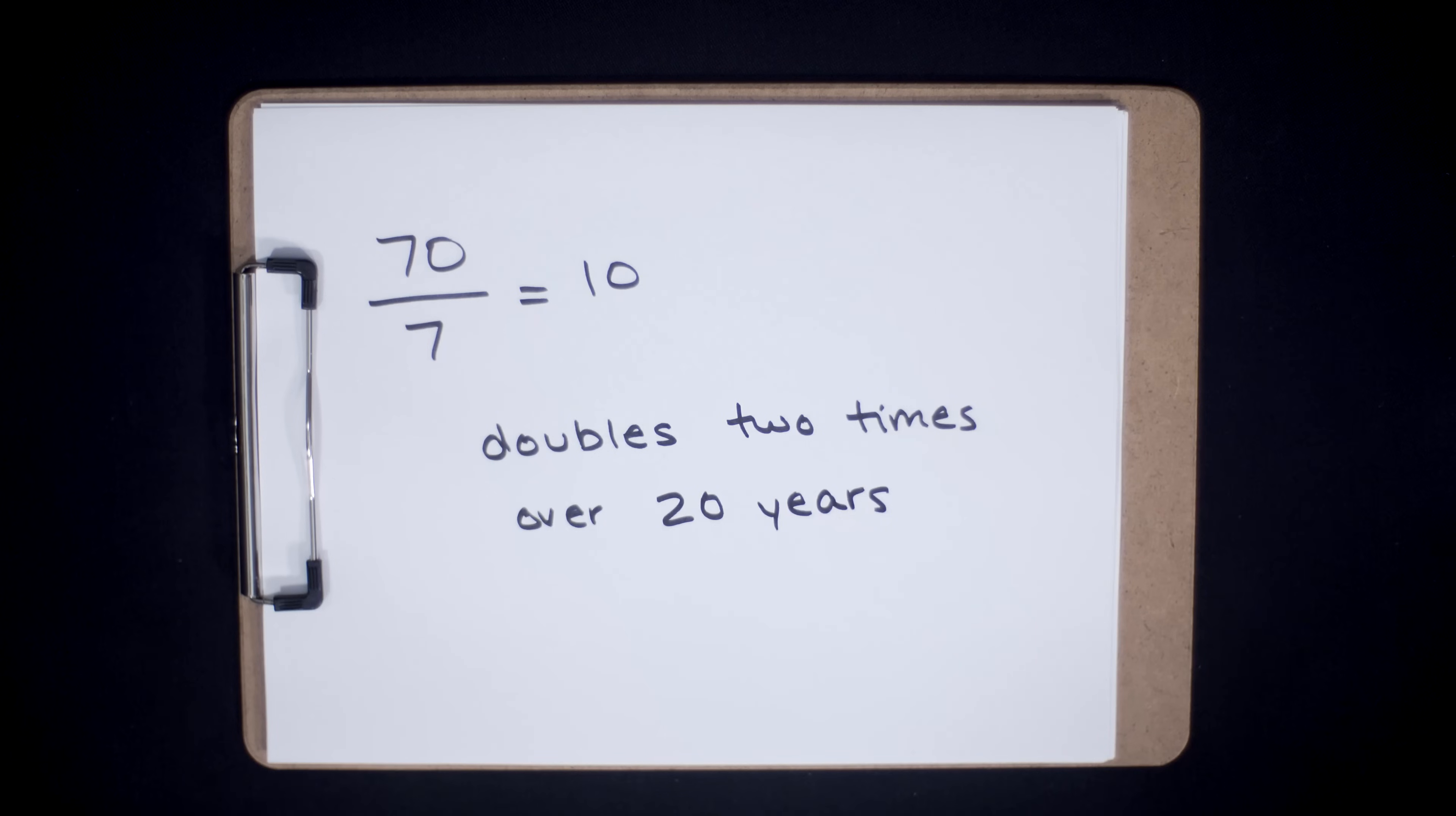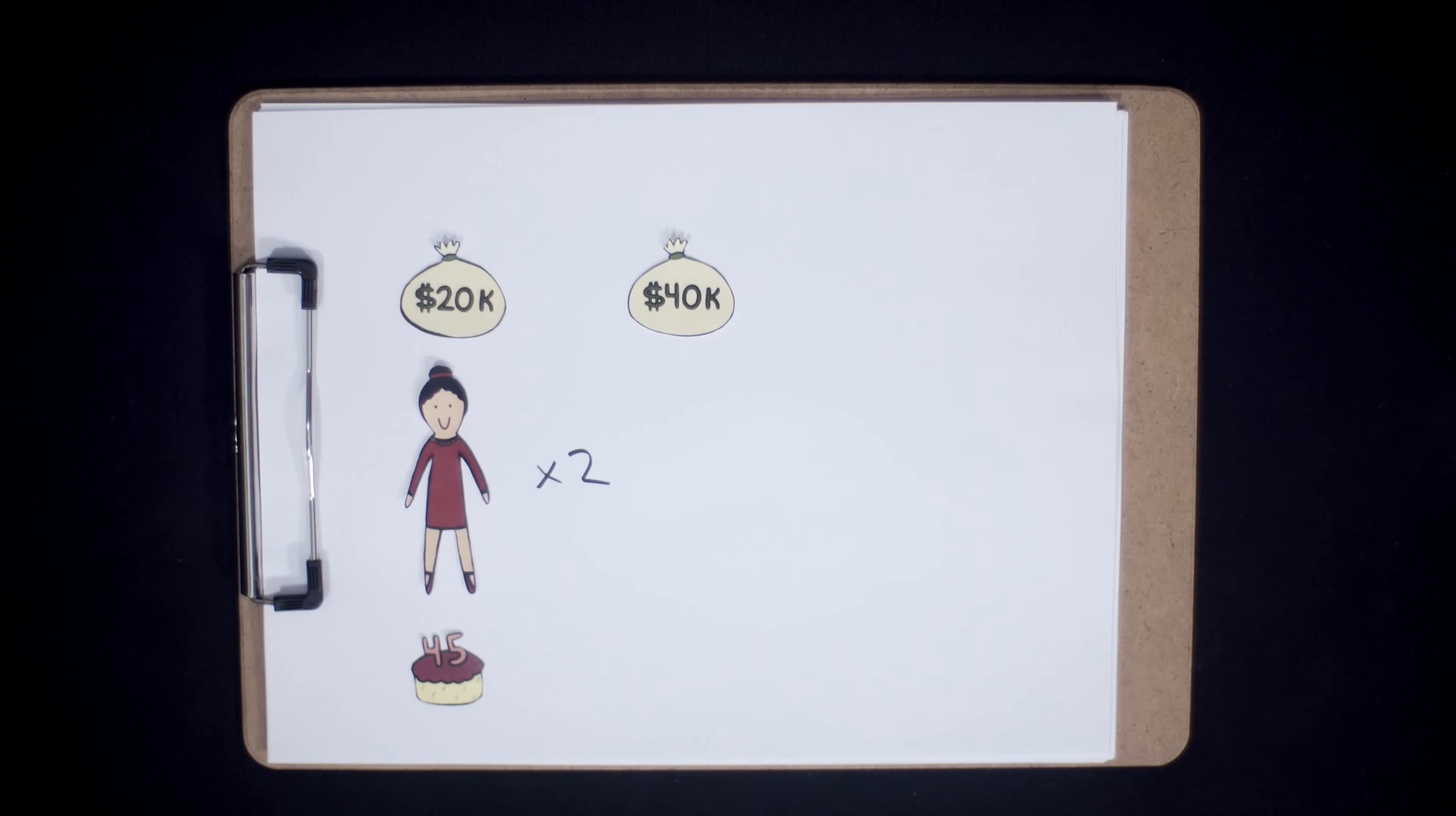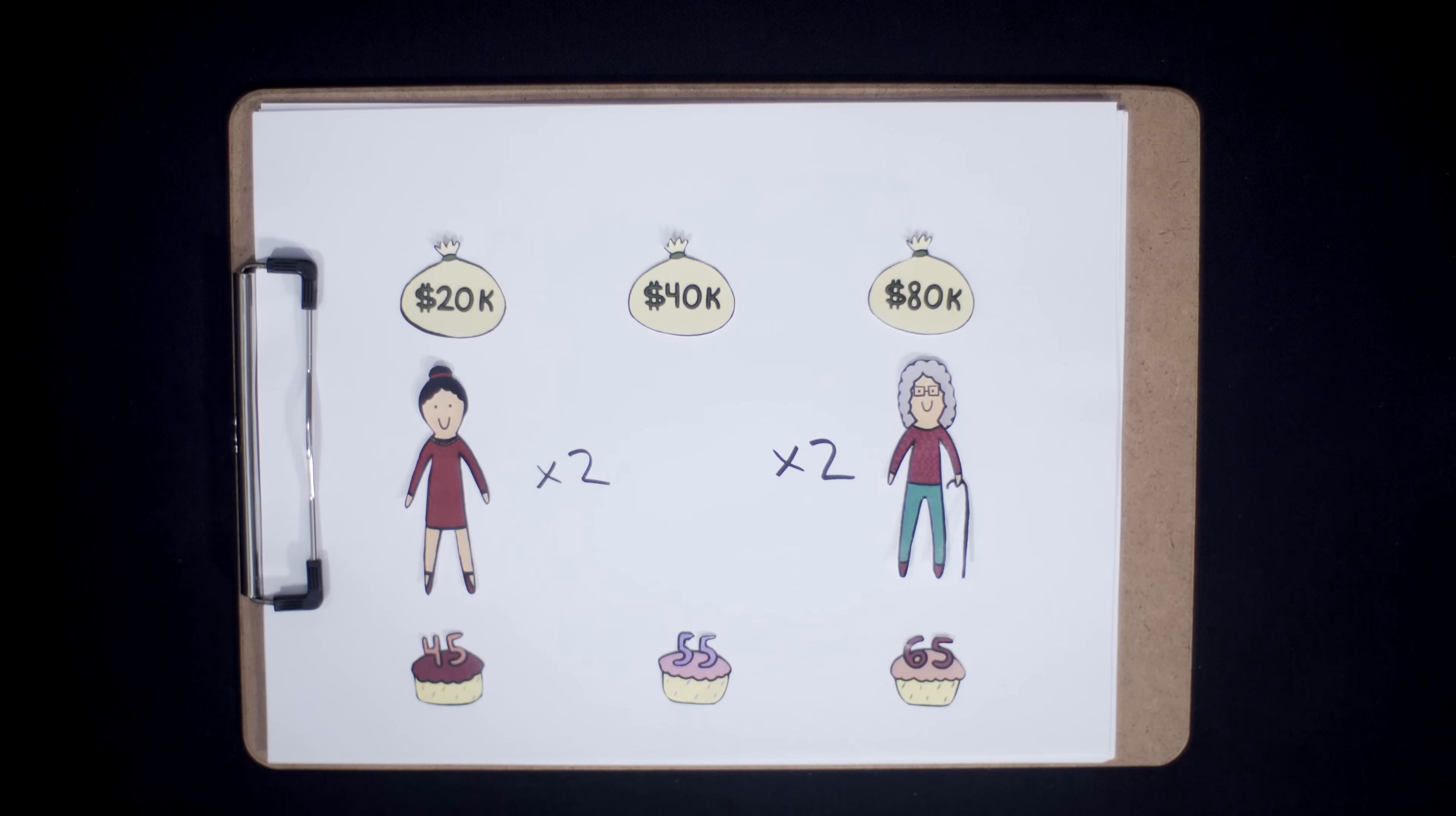Since she's investing for 20 years, her money doubles twice. Myopic Mary's $20,000 doubles to roughly $40,000 by the time she's 55 and doubles yet again to $80,000 by the time she's 65 and ready to retire. So she started with $20,000, did not save a single cent more, reinvested her returns, and after 20 years ended up with about $80,000. Not too bad.